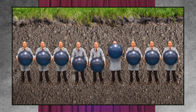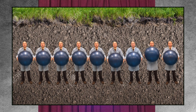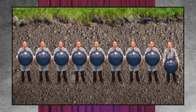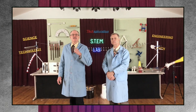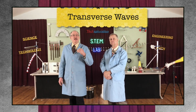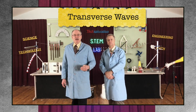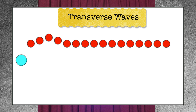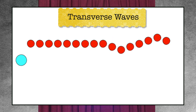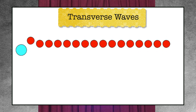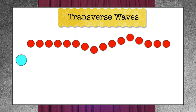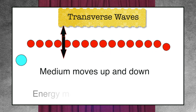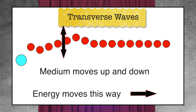Waves moving through the earth are called earthquakes. Now this kind of wave is called a transverse wave because the medium moves up and down and the motion of the wave moves side to side. When you drop a rock into the water, it causes a transverse wave.